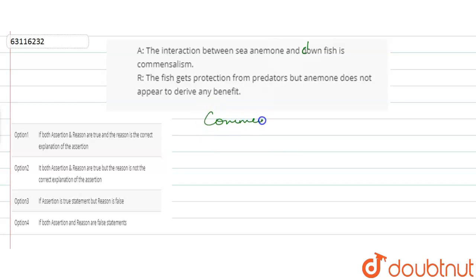Now, first of all, let's understand what commensalism is. This is the interaction where one organism has a benefit, and the other has neither benefit nor harm.